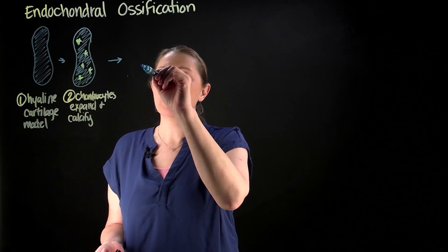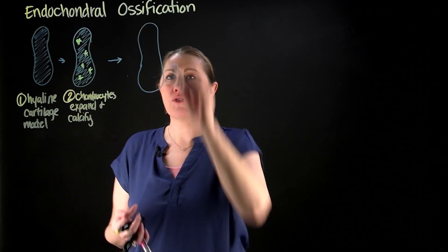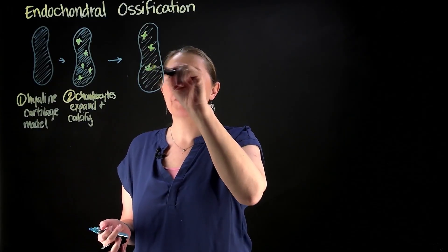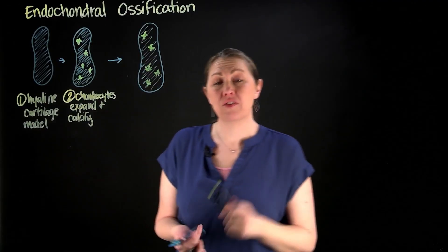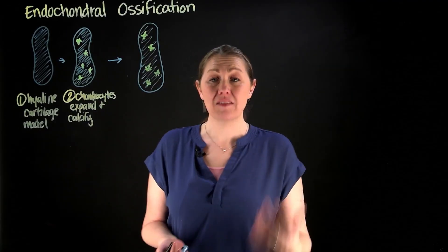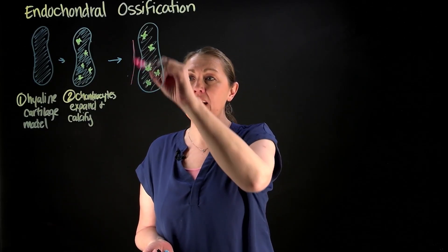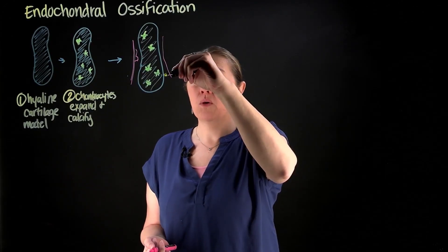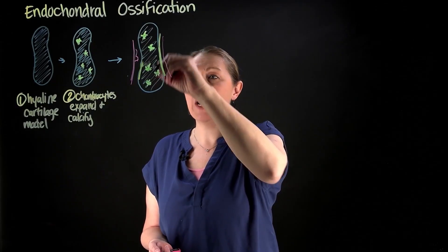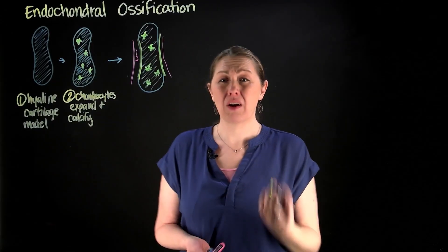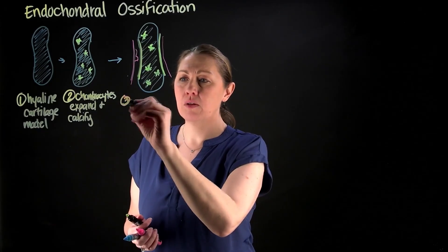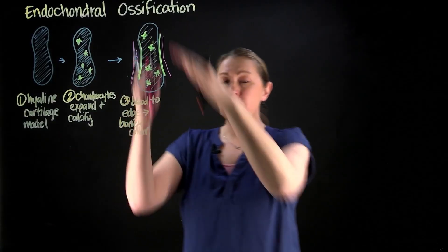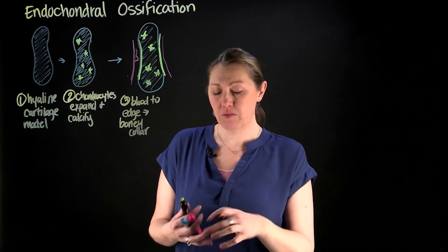Now we're going to start adding bone around the edges. We have our hyaline cartilage model with chondrocytes on the inside that have expanded and calcified. To lay down bone, we're going to need osteoblasts as our bone builders, and we're going to need blood supply. We put blood supply at the edges so we can start putting bone there. Anytime you want to lay down bone, first you've got to get blood there. Once we get blood there, we can replace the outer edge with bone — making that bony collar, which forms our diaphysis or shaft of our long bone.